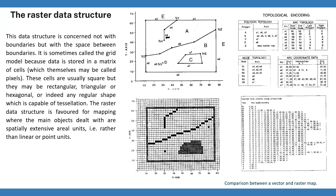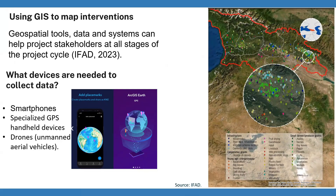Now we will talk about the application — how we can apply GIS tools for territorial intervention, water management, and planning. Geospatial tools, data, and systems can help project stakeholders at all stages of the project cycle. We are talking about rural development projects, water management projects, etc. Beneficiaries and other local people can use data-enriched maps and satellite imagery to understand how the project is trying to support them. The maps can enable them to participate more effectively in project planning and implementation.